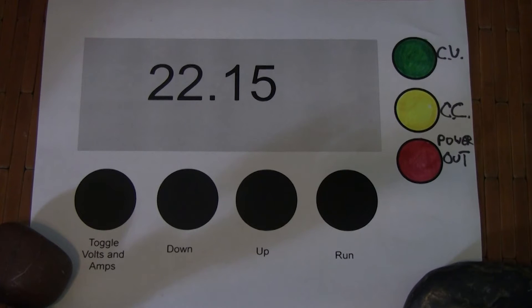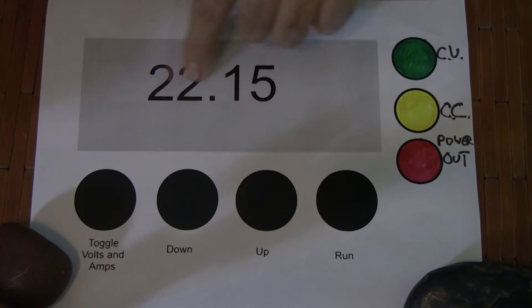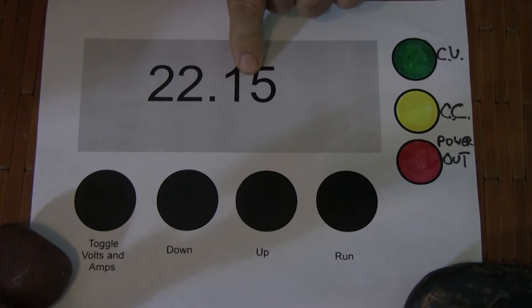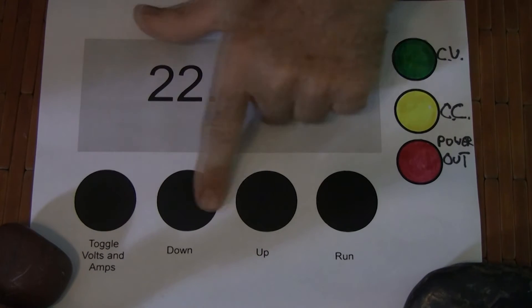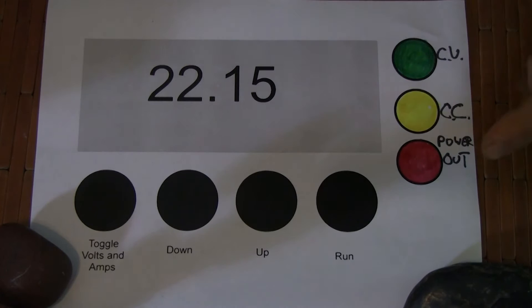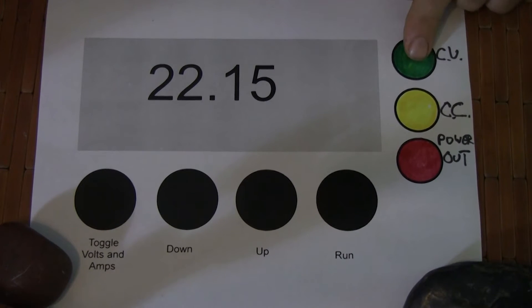This is a drawing of the display on the DROC. This is the LED display where the voltage and current is shown. These are some toggle switches down below. And this red comes on when power is coming out. The yellow comes on during the constant current phase. And the green comes on during the constant voltage phase.